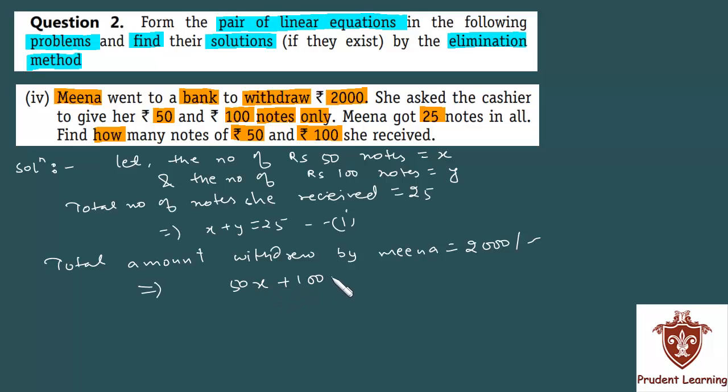plus 100 times y equals 2,000. Where does this equation come from? Total 2,000 rupees she withdrew, in which she got 50 rupee notes and 100 rupee notes. So 50 rupees के कितने notes थे, x, so 50x. And 100 rupees के कितने notes थे, y, so 100y.